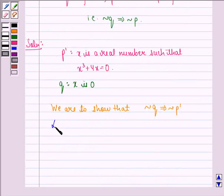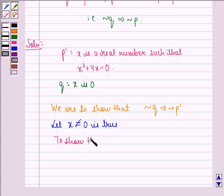So let X not equal to 0 is true. So that means Q is not true, that means not Q is true. Then we have to show that X³ plus 4X is not equal to 0.